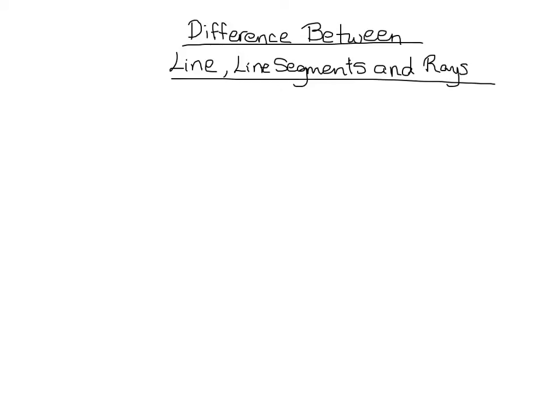So first, let's talk about a line. So a line is infinitely many points. It has no thickness, it has no width. The only reason you see a thickness here when I draw it is because I have to be able to represent it in some way so that you can actually visualize it. But really and truly, it's just infinitely many points going that way and going that way.